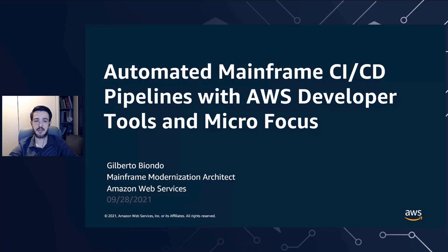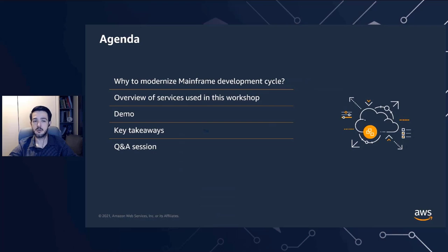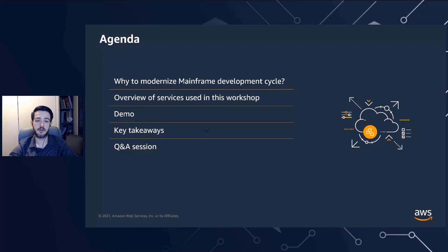In our workshop today, we're going to talk about automated mainframe CI/CD pipelines with AWS developer tools and Microfocus. We'll cover why to modernize a mainframe development cycle, briefly overview the services used, then go through a demo showing all services working together to deliver an automated CI/CD pipeline for a mainframe application, followed by key takeaways and a Q&A session.